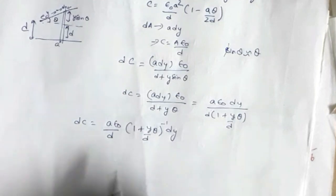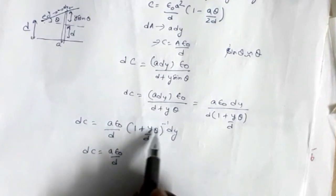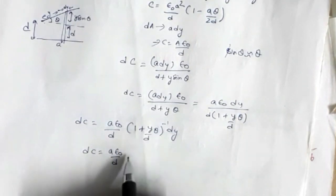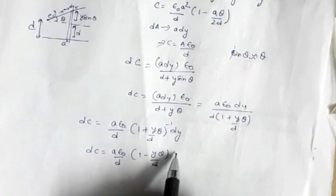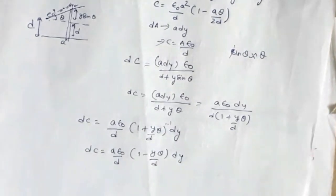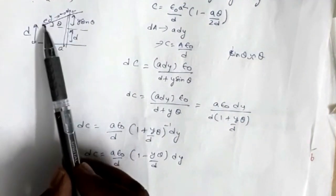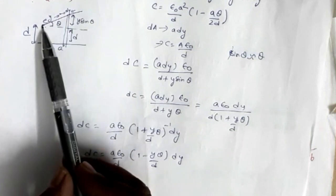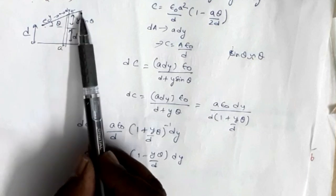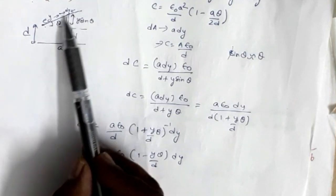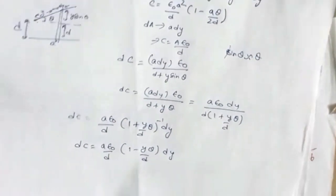Applying the binomial theorem, this reduces to dc = (a·ε₀/d)·(1 - yθ/d)·dy. Now this is the capacitance of the small differential element. This element can exist anywhere from one end to the other end of the plate. When the element is at one end, y = 0; when it is at the other end, y = a, since a is the side length of each plate. So y varies from 0 to a.